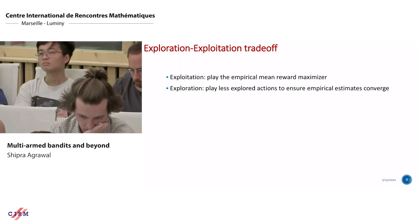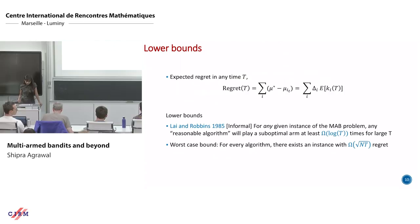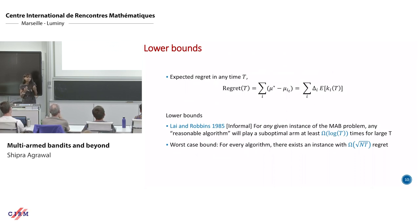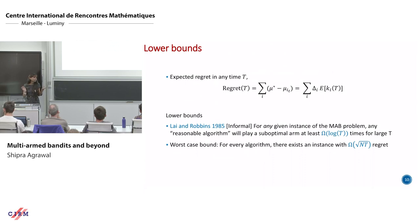Before presenting algorithms with good upper bounds, let's think about the limitation: what is the best we can hope for? We are trying to minimize regret — the total difference between what we could have gotten and what we actually got. So what's the best any algorithm can achieve?